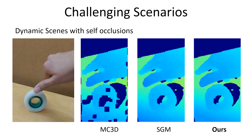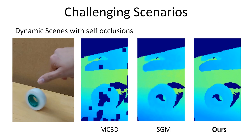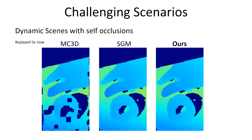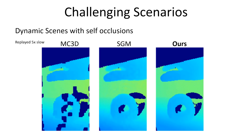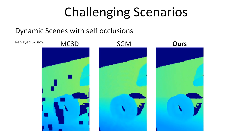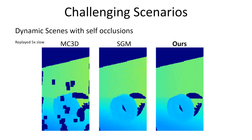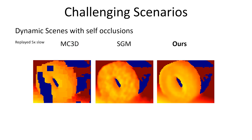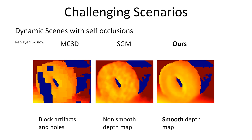We also show the performance of our method in highly dynamic scenes like the spinning tape, which also includes self-occlusions. The MC3D method over-smooths the occluded regions and suffers from missing depth samples. While SGM and our method perform similarly, our method produces smoother depth maps.